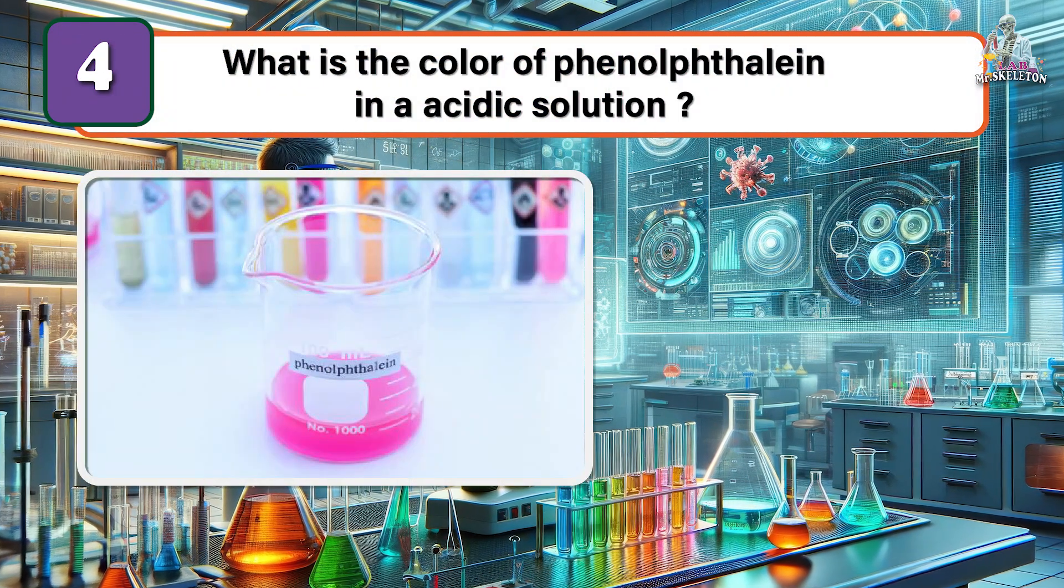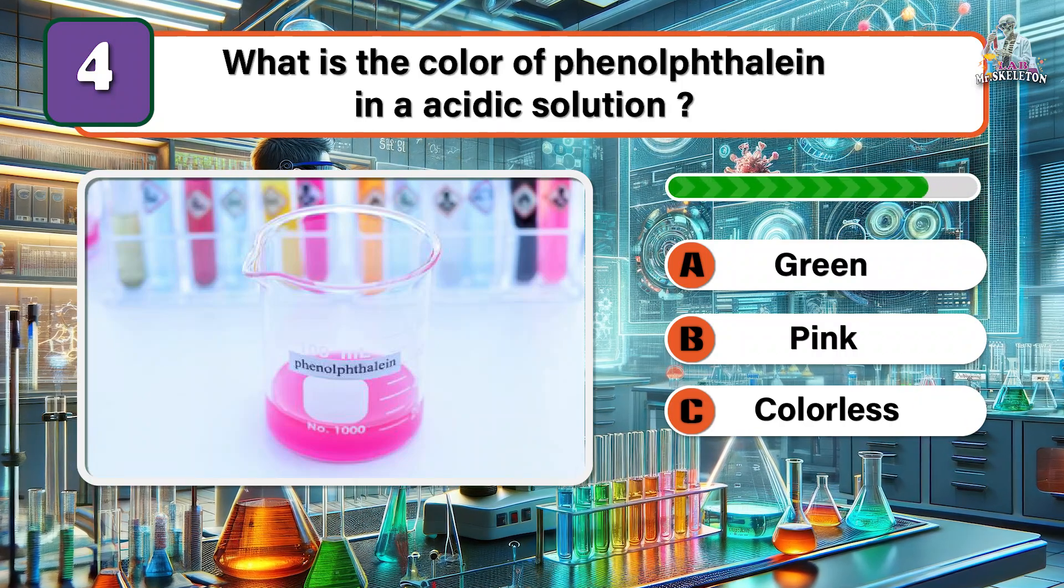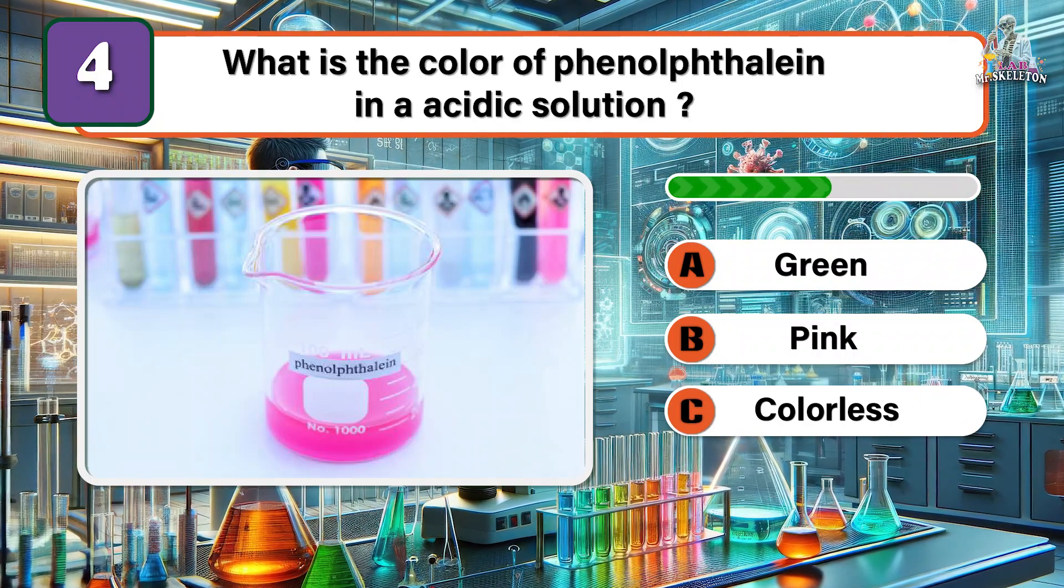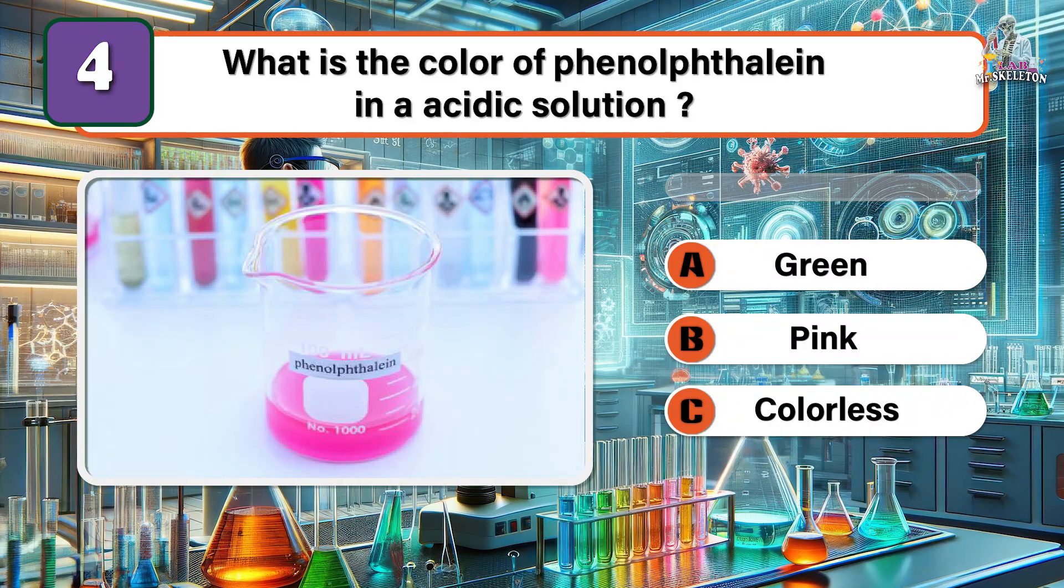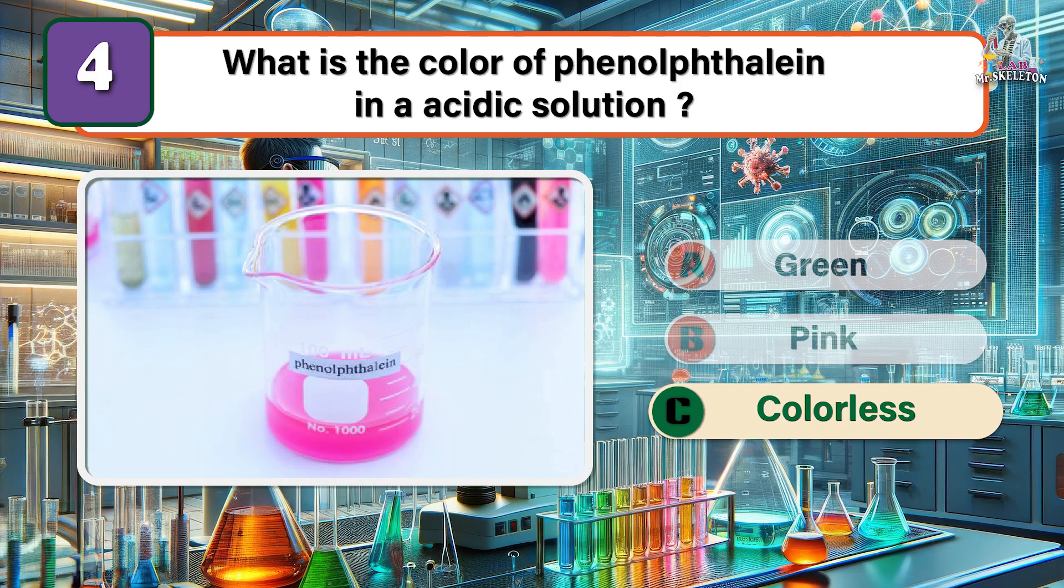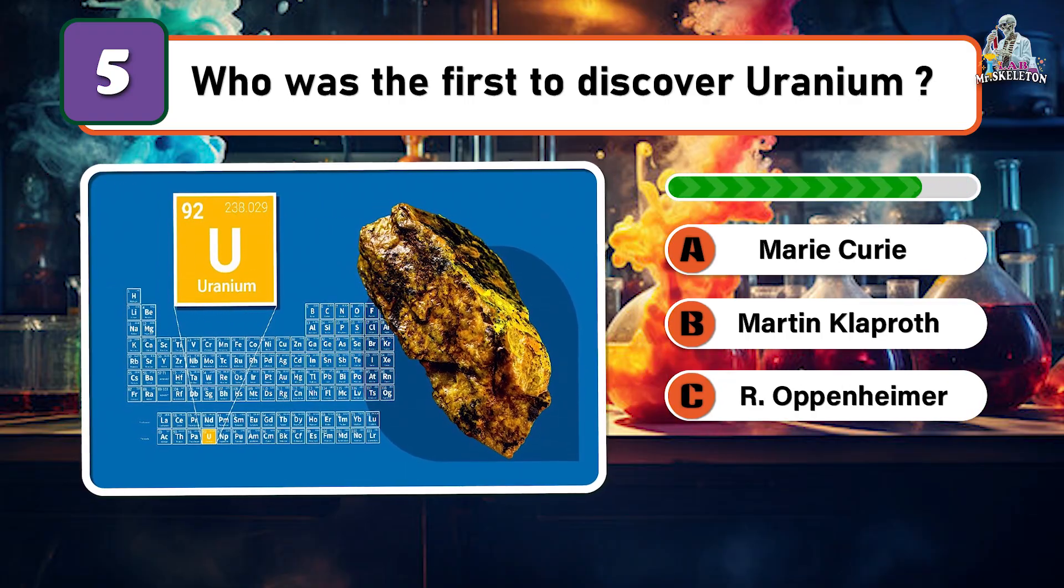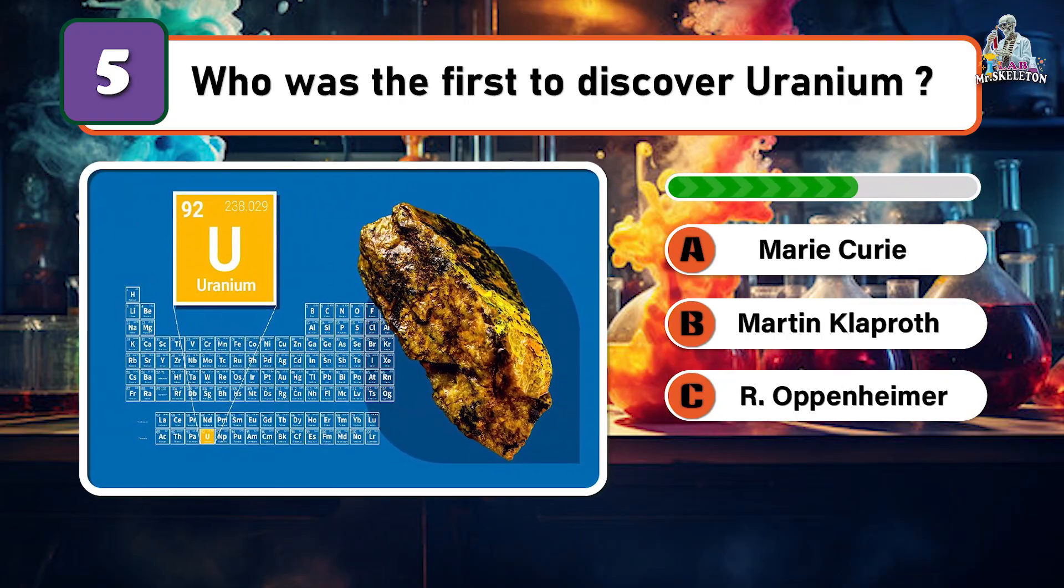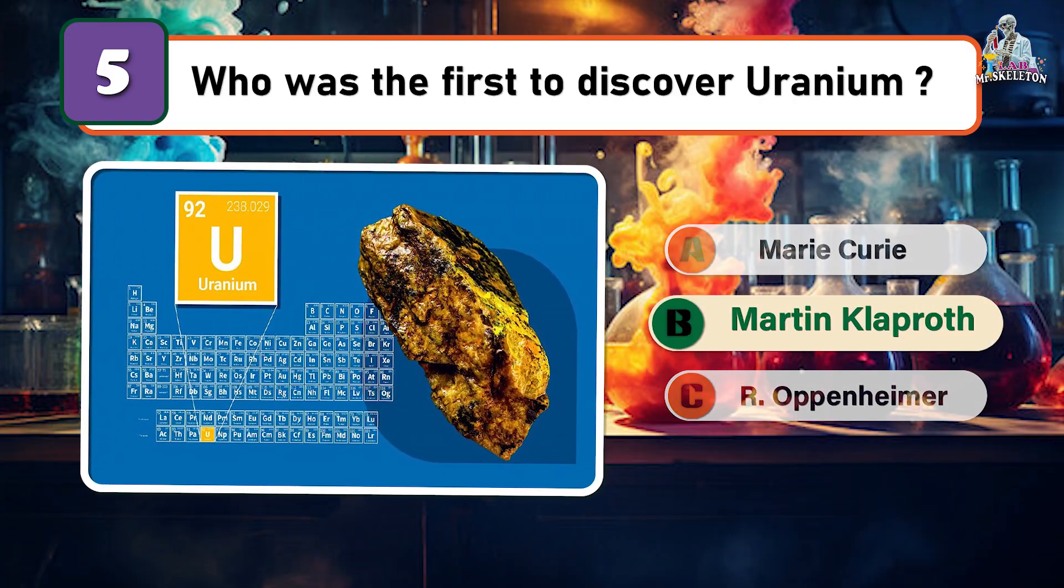What is the color of phenolphthalein in an acidic solution? Colorless. Who was the first to discover uranium? Martin Klaproth, a German chemist.